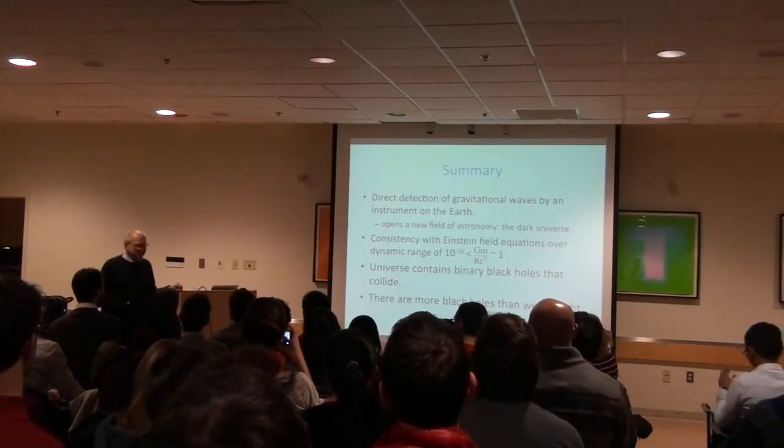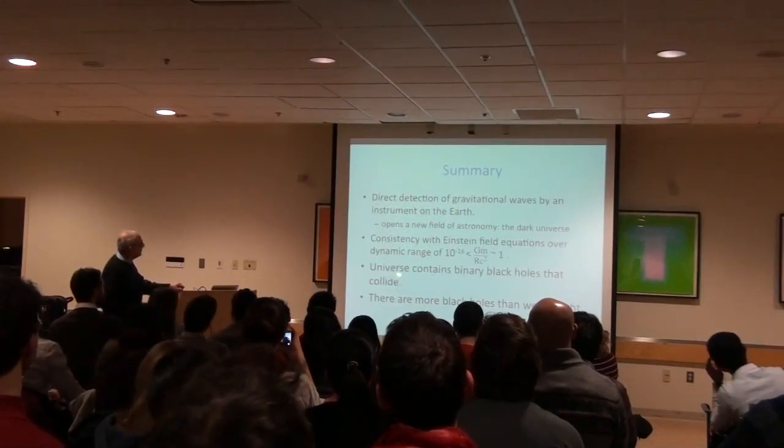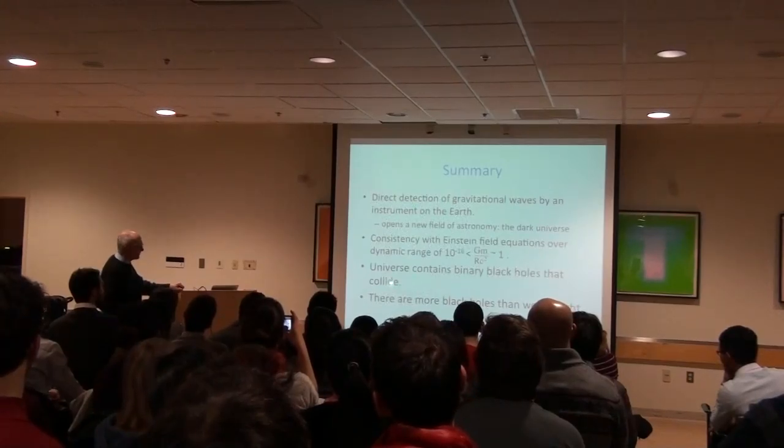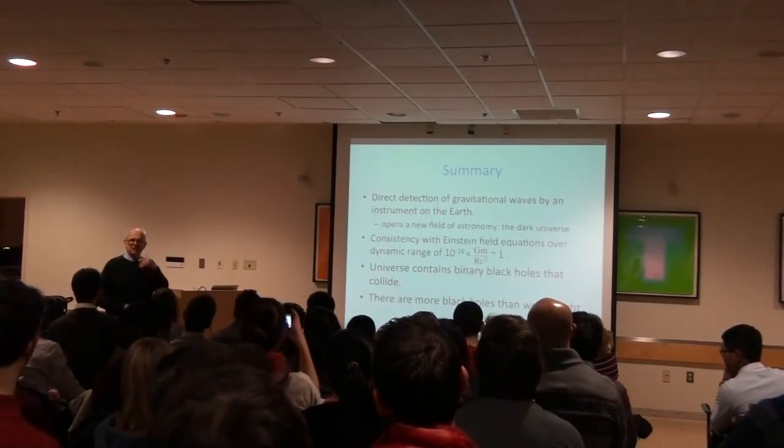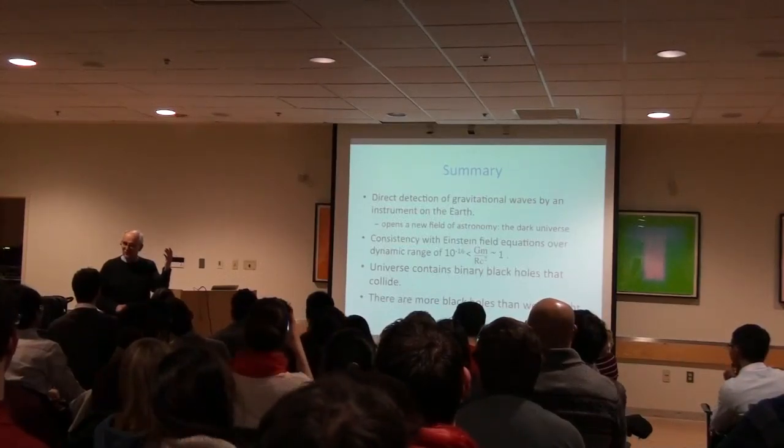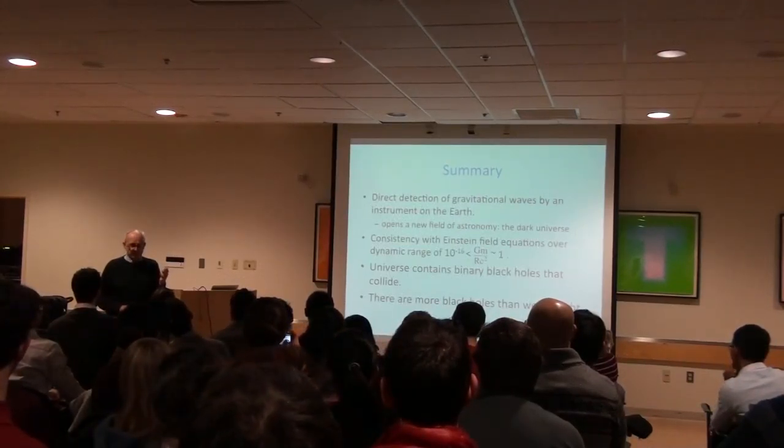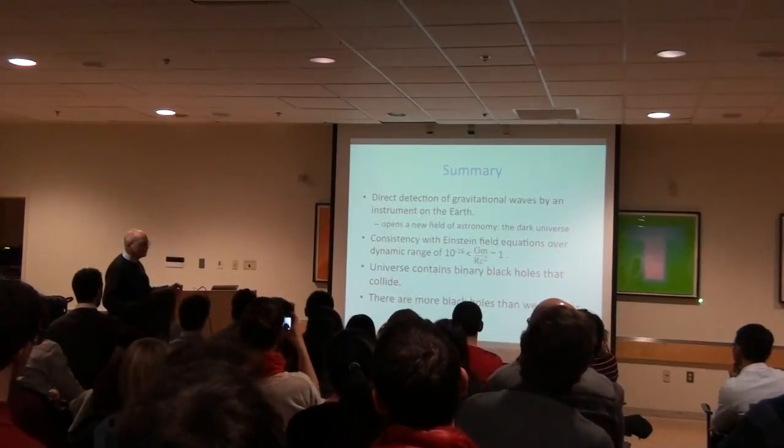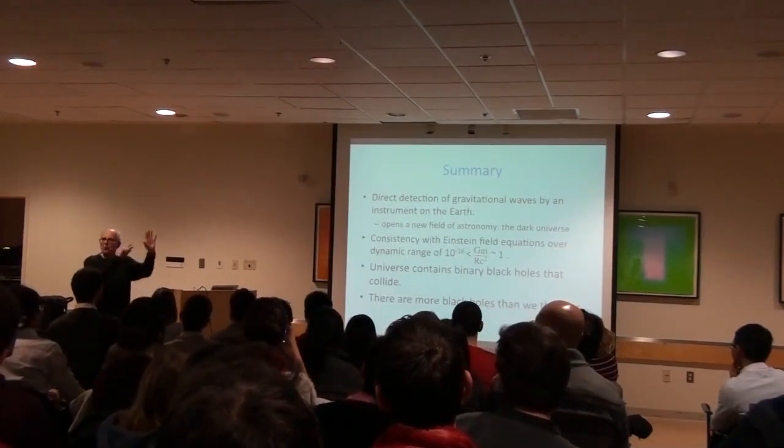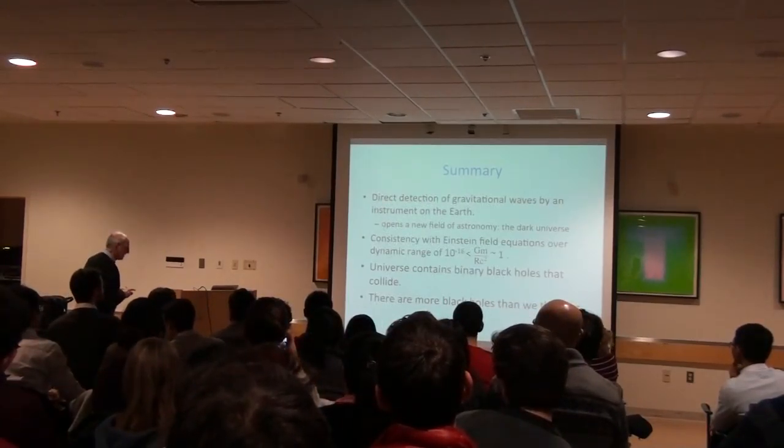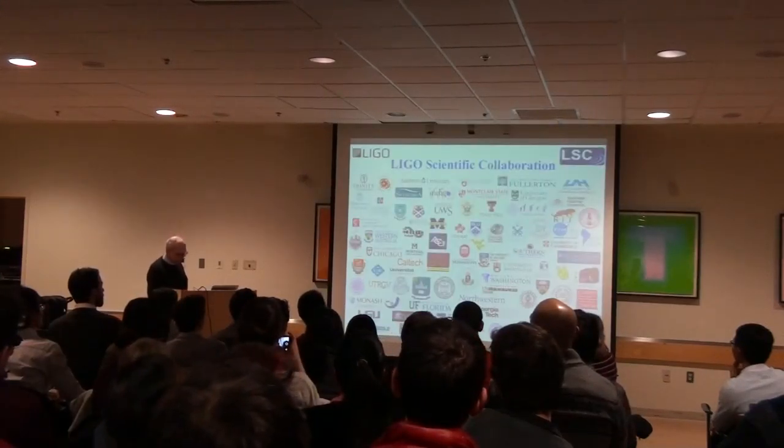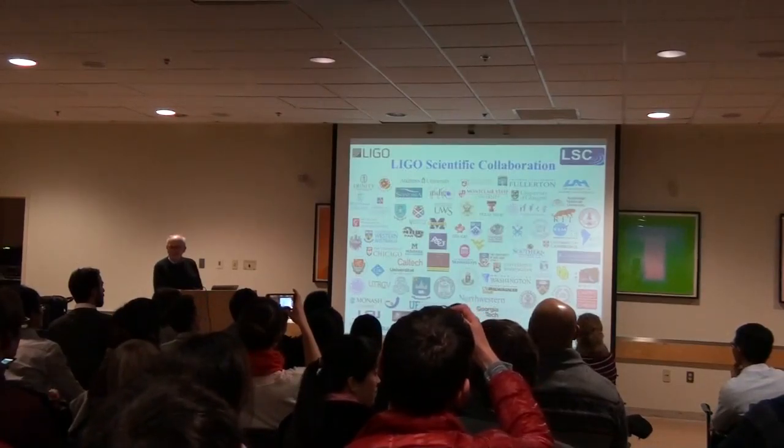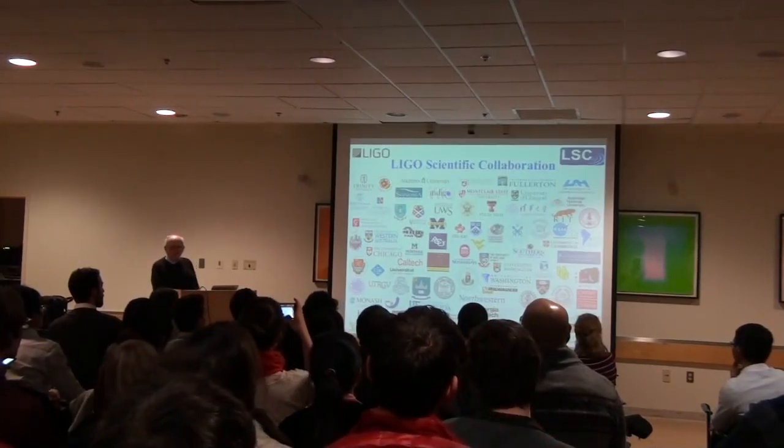The universe now we know contains black holes that collided. People didn't know that. When we initially designed LIGO, we were thinking only neutron stars because we didn't know how to calculate how many black holes there were. The other thing is there seems to be more black holes than people thought. These are the two astronomical things that come from this one little observation. I want to show you—these are all the collaborators and their institutions. There's 90 institutions that are involved with us, and there are 1,000 scientists.